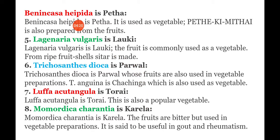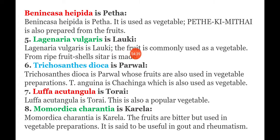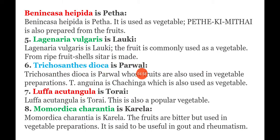Beninkasa Hispida is used as a vegetable. Lagenaria vulgaris, known in Hindi as Lauki, is commonly used as a vegetable, and from the ripe fruit, the fruit shell is used for sitar making. Trichosanthus diocea is also used as a vegetable.